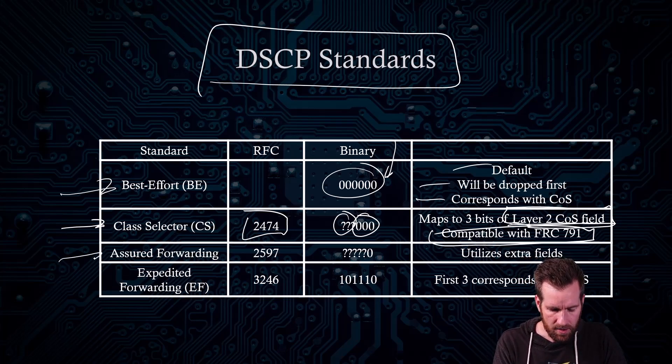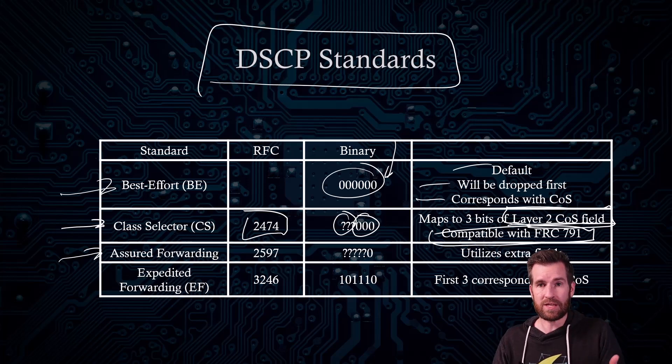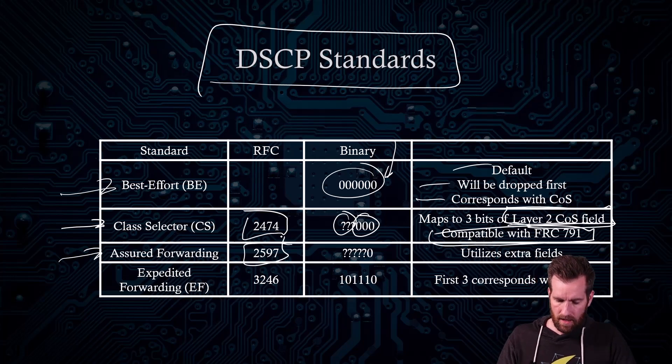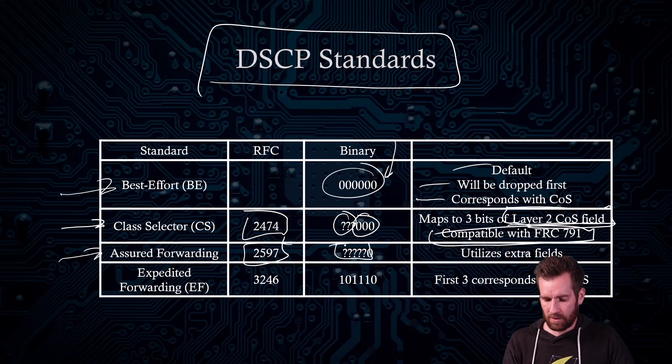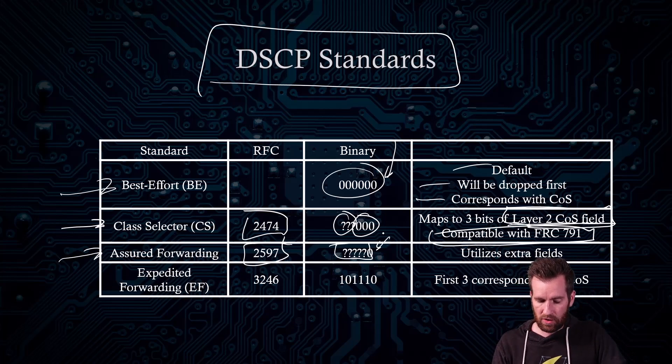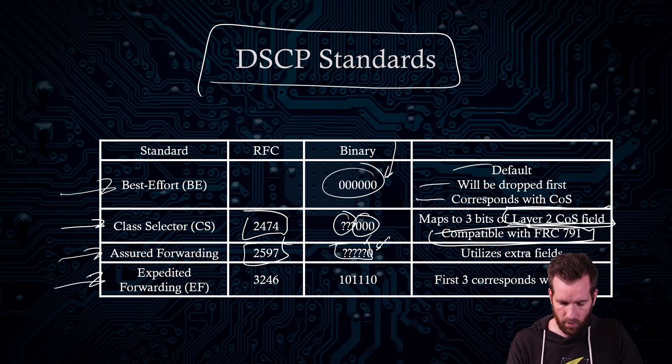Then we have the assured forwarding. This is what gives us the extra capabilities. And we'll talk about those extra capabilities as we go along here. And that's defined by RFC 2597. It's the first five bits that are variable here. The last bit, for some reason, is zero and utilizes these extra fields at the end, or at least two of the extra fields at the end. And then we have expedited forwarding.